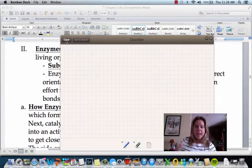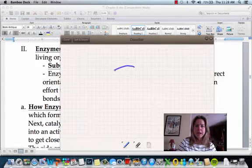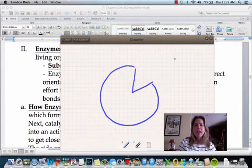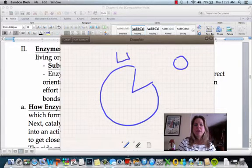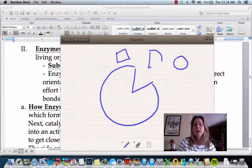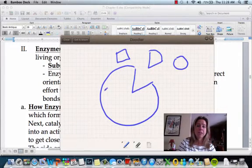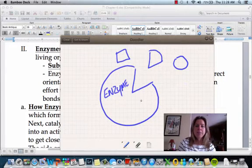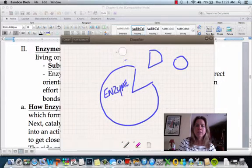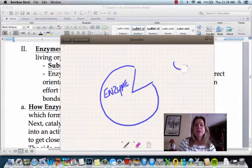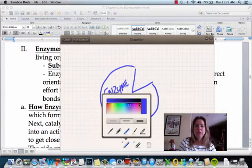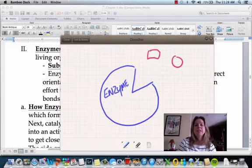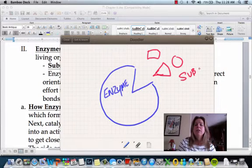Enzymes are going to have a specific shape. I'm just going to make this one look like this. There are going to be all sorts of different things floating around that are going to want to try to fit into this enzyme. So we'll say this is the enzyme, and I'm going to do these in a different color. These are going to be something that are called substrates.